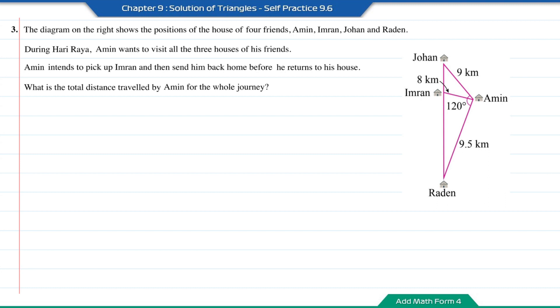Question 3. The diagram on the right shows the position of the houses of four friends, Amin, Imran, Johan and Raden. During Hari Raya, Amin wants to visit all the three houses of his friends. Amin intends to pick up Imran and then send him back home before he returns to his house. What is the total distance traveled by Amin for the whole journey?